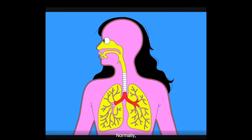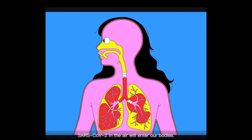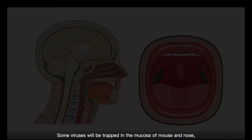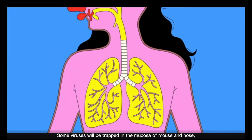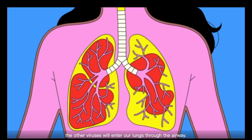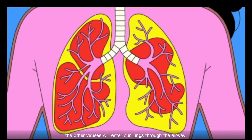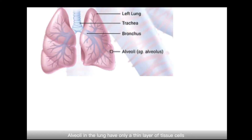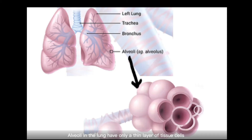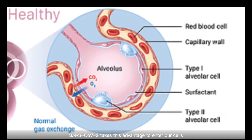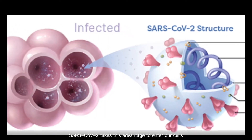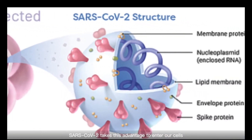Normally, as we breathe, SARS-CoV-2 in the air will enter our body. Some viruses will be trapped in the mucosa of the mouth and nose. The other viruses will enter our lungs through the airway. Alveoli in the lung have only a thin layer of tissue cells to facilitate gas exchange with red blood cells.